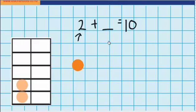So now I'm thinking, how many more counters would I need to fill this 10s frame? Well, I can see there's 3 spaces here, and there's 5 spaces here. So in total, I'd need 8 more counters to fill this. So 2 plus 8 equals 10.